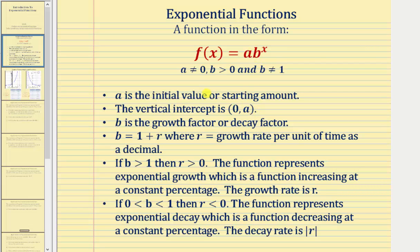The base b is called the growth factor or decay factor, where b equals one plus r, and r is equal to the growth rate per unit of time as a decimal.